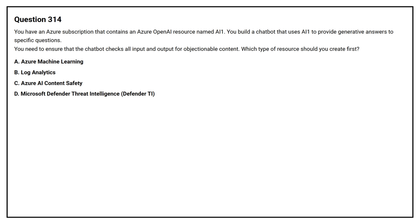Question number 314. You have an Azure subscription that contains an Azure OpenAI resource named AI1. You build a chatbot that uses AI1 to provide generative answers to specific questions. You need to ensure that the chatbot scans all input and output for objectionable content. Which type of resource should you create first? Option A: Azure Machine Learning. Option B: Log Analytics. Option C: Azure AI Content Safety. Option D: Microsoft Defender Threat Intelligence.